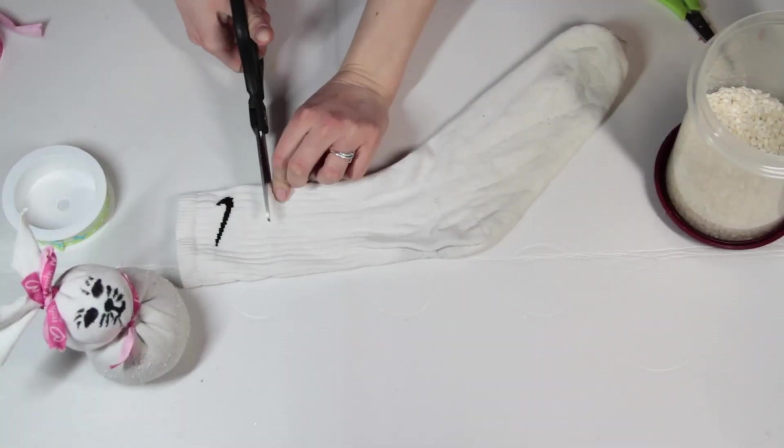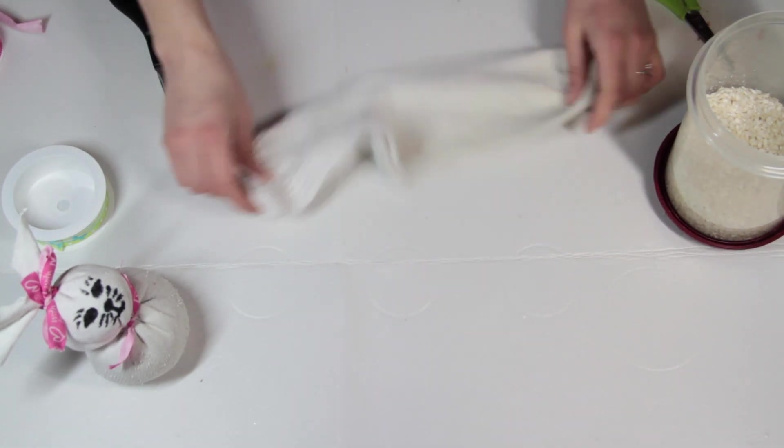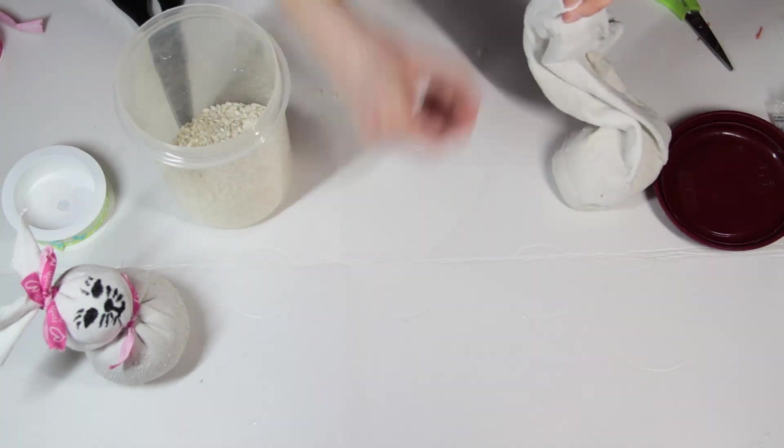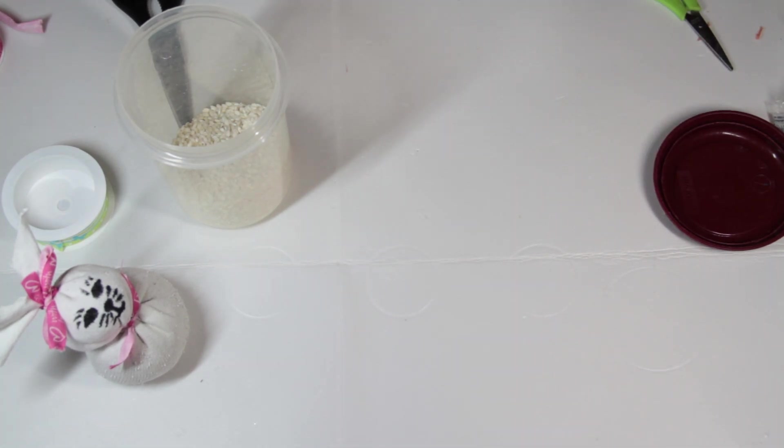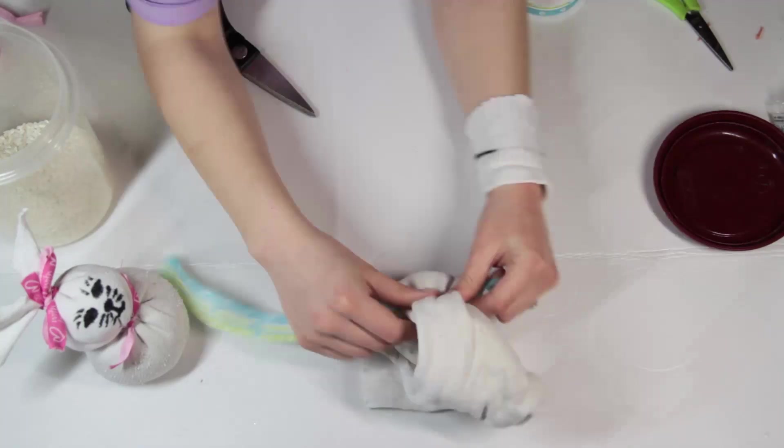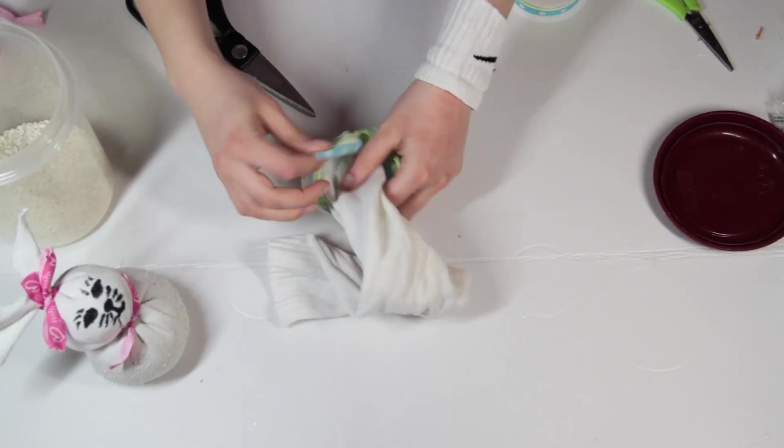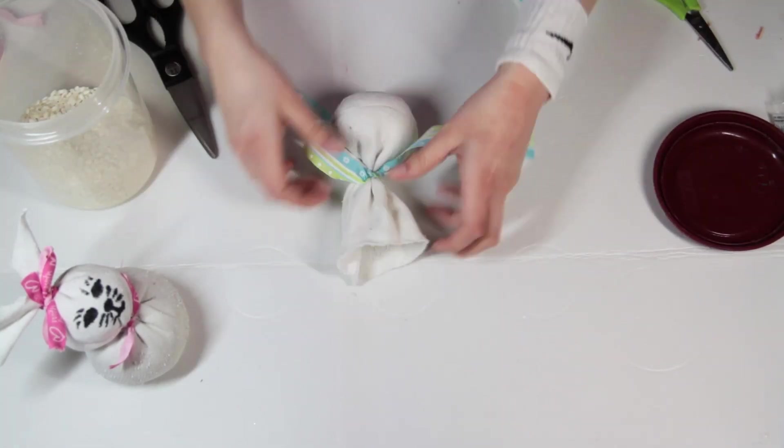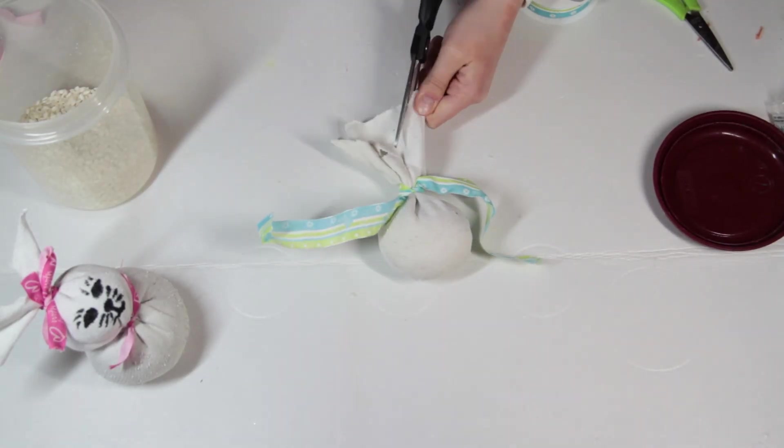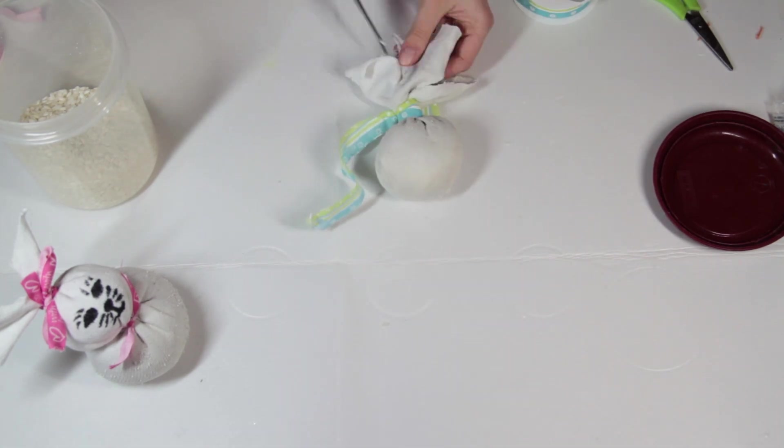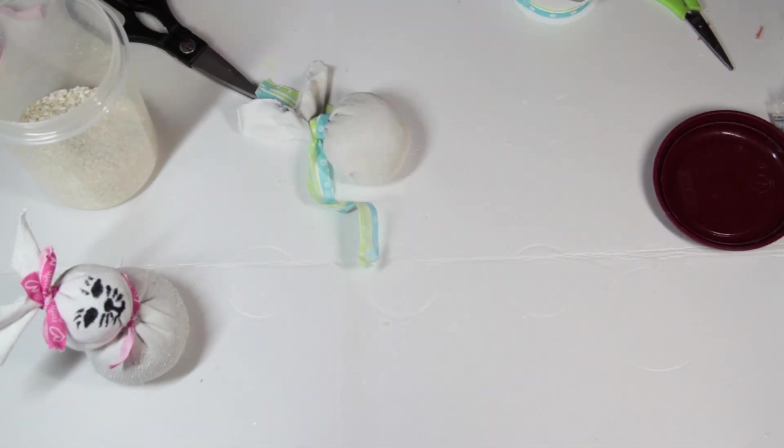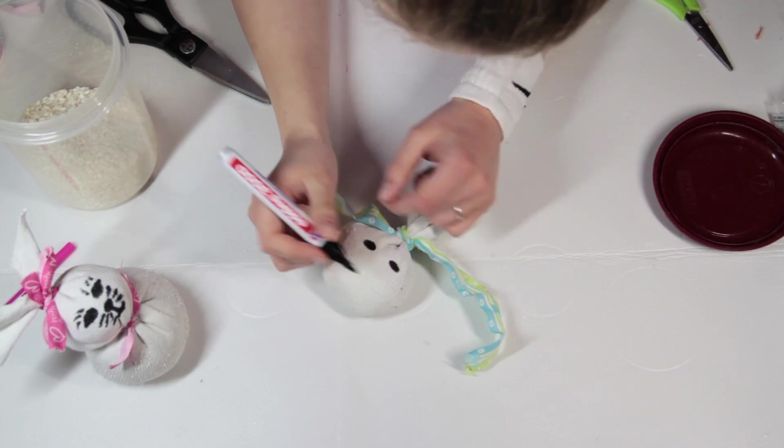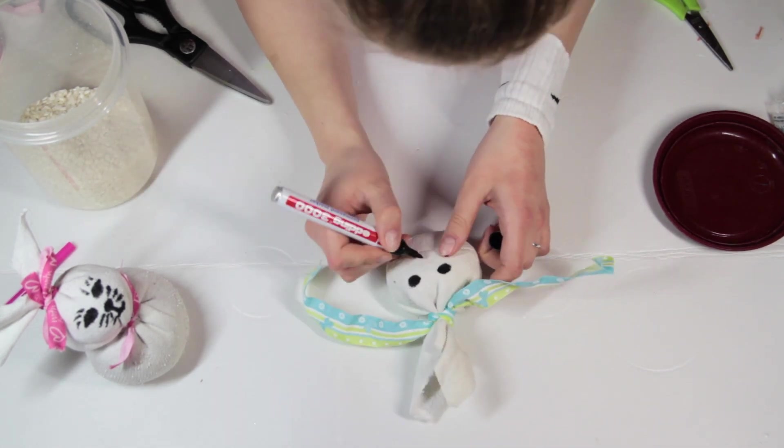There you go, pretty easy bunny made out of a sock. There's a second try, it's the same thing again, just that we didn't make a body and a hat, we just made a little head so it's a baby bunny. Draw the face again and you can create a whole bunny family out of that.